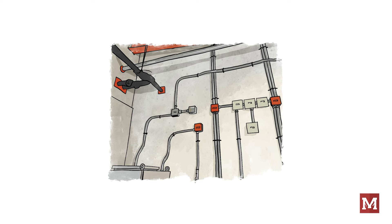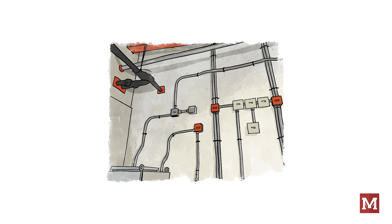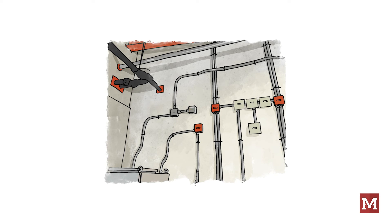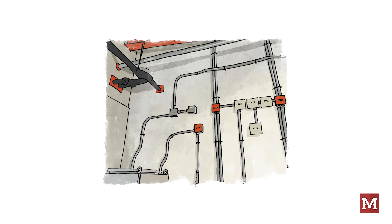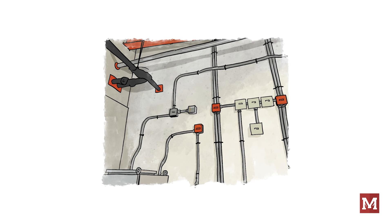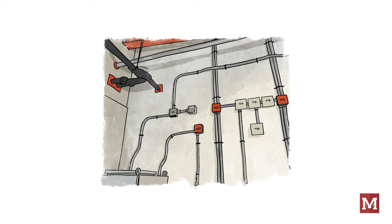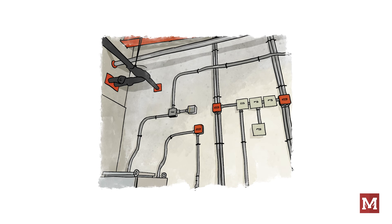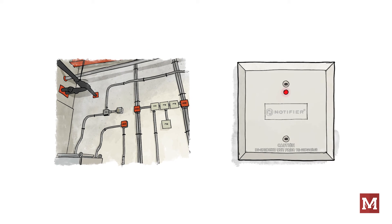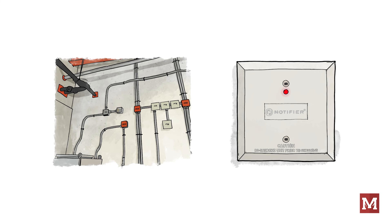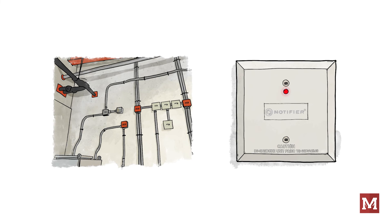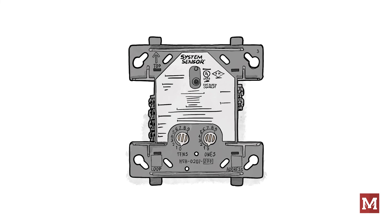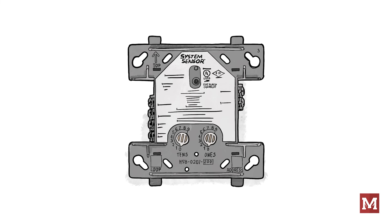Modules are typically placed adjacent to or within the enclosure of the equipment they are connected to. There are some specific rules — emergency control function interface devices are required to be within three feet of the component controlling the emergency control function, unless it's a Class D circuit. Whether it's a relay module, control module, or monitor module, they are typically mounted in a 4S back box and have a clear plastic cover with an LED in the middle. If the LED is solid red, there's been an activation of the module and you should have an audible indication at the fire alarm control unit. If it's green, that's normal.